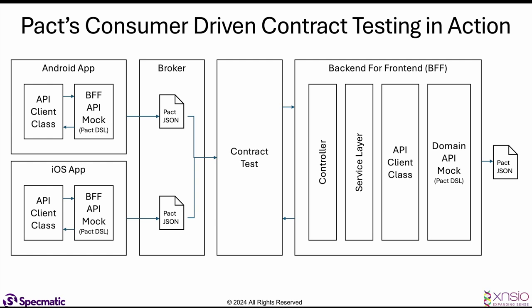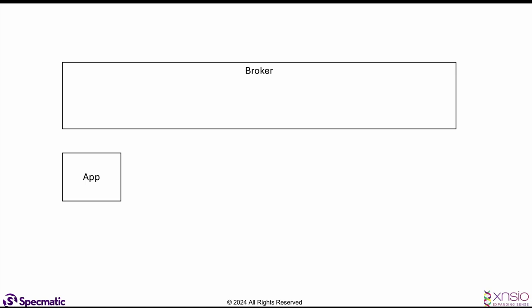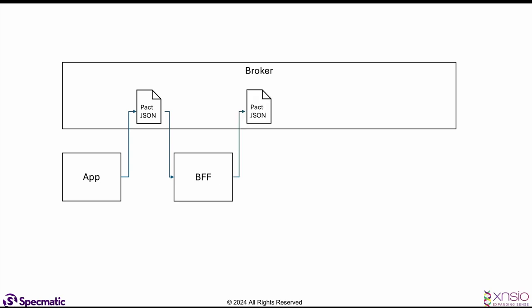This gives you a rough overview of where this is going. For a feature built all the way from the app to the BFF to the domain service calling a third party, the journey looks like this: first the app is built as the consumer and generates its PACT JSON for the BFF, which is run as a contract test against the BFF. Then in the BFF you define the mock for the domain API, unit tests generate a PACT JSON for the domain service, and you start building the domain service using that PACT JSON as a contract test. The domain service in turn depends on a third-party service, which must also be mocked using PACT DSL to generate yet another PACT JSON.